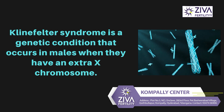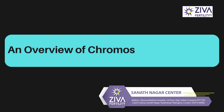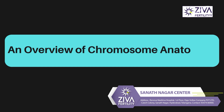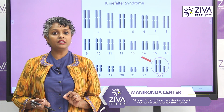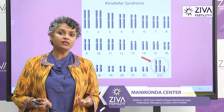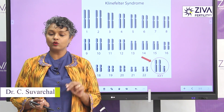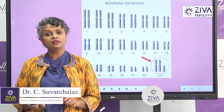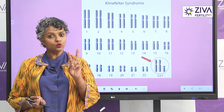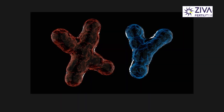We as human beings have 46 chromosomes, which is 23 pairs. Out of these 23 pairs, one pair is a sex pair. In females, there are two sets of X chromosomes — so XX. In males, there are two chromosomes, one X and one Y.